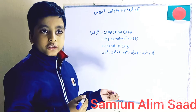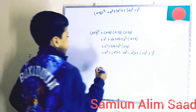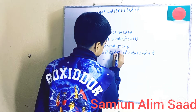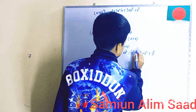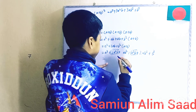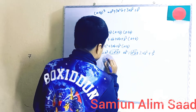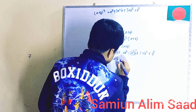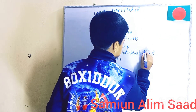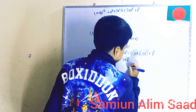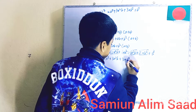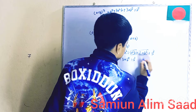Now we need to simplify this whole string. The 2A square B and the A square B — we can add them to get 3A square B. Then the AB square and 2AB square — we can add them to get 3AB square. Plus B cube, the last thing.